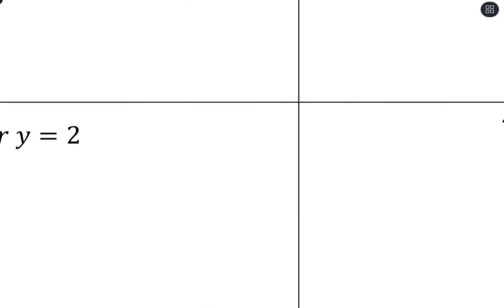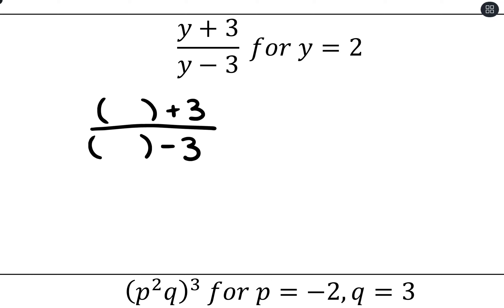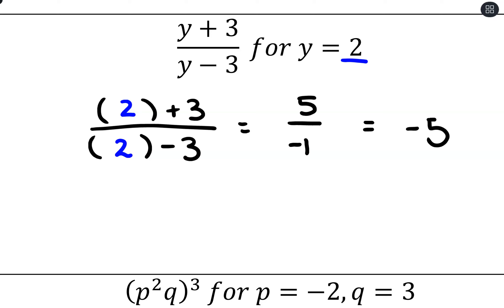For (y + 3) over (y minus 3), substituting y = 2: we get (2 + 3) over (2 minus 3), which is 5 over negative 1, which equals negative 5.